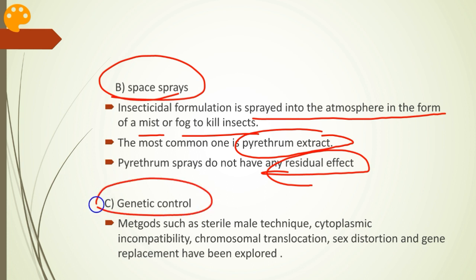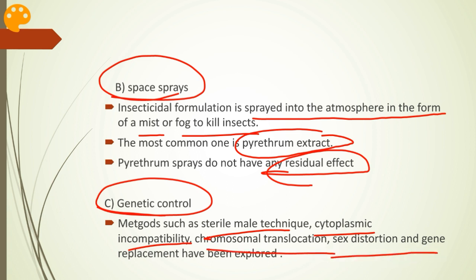Coming to genetic control techniques: methods such as sterile male technique, cytoplasmic incompatibility, chromosomal translocation, sex distortion, and gene replacement have been explored. Their use is still in the research phase, but these techniques have great potential in mosquito control because they have certain advantages over chemical methods — being cheaper, potentially more efficient, and above all not subject to vector resistance.